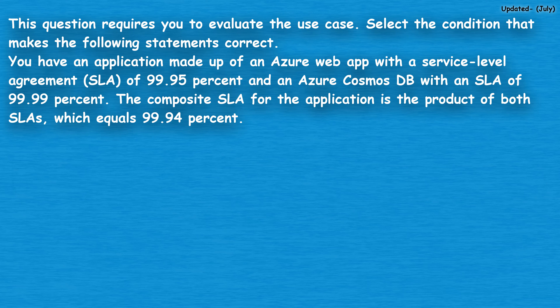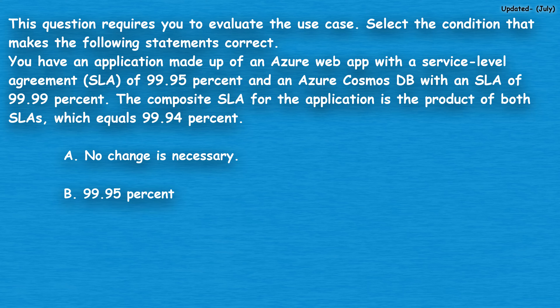The next question requires you to evaluate the use case. Select the condition that makes the following statement correct. You have an application made up of an Azure web app with an SLA of 99.95% and an Azure Cosmos DB with an SLA of 99.99%. The composite SLA for the application is the product of both SLAs, which equals 99.94%. Option A: no change is necessary. Option B: 99.95%. Option C: 99.99%. Option D: 0.04%.